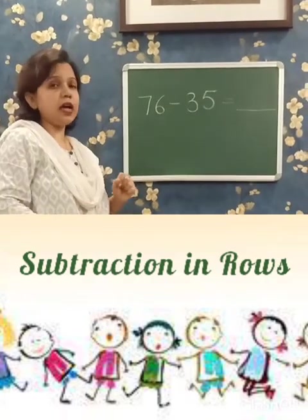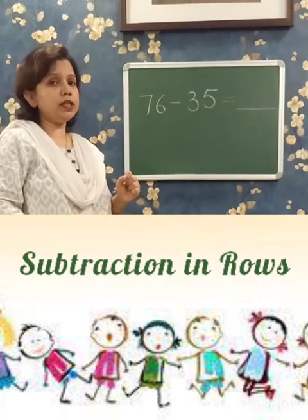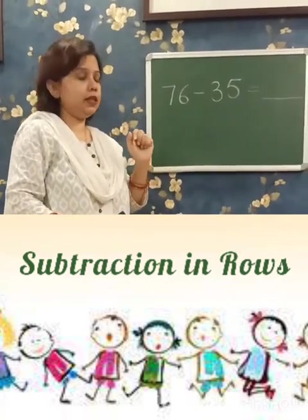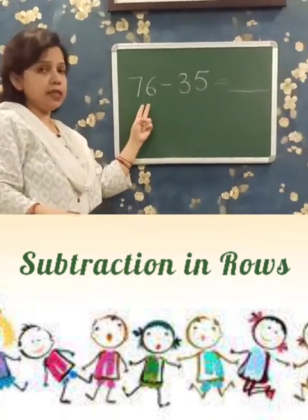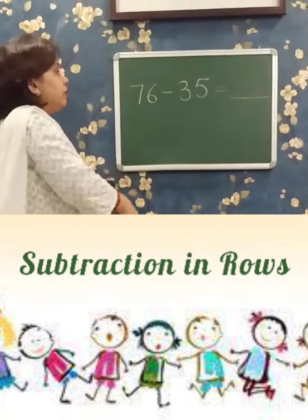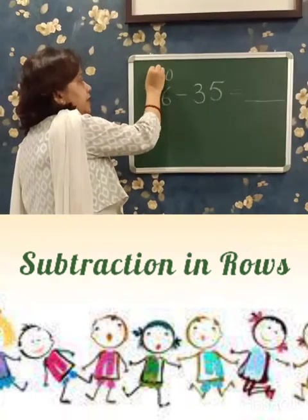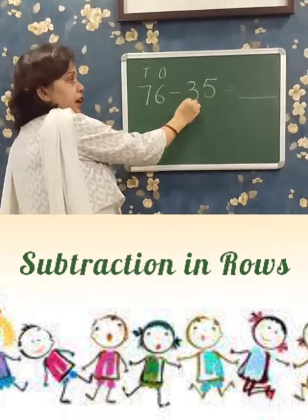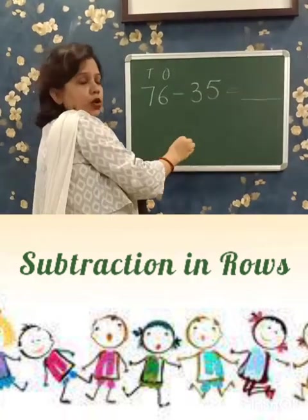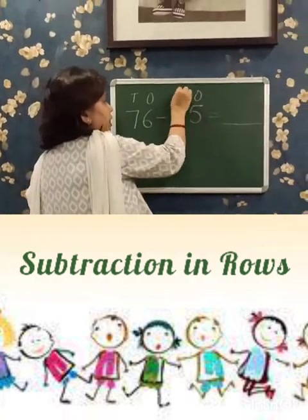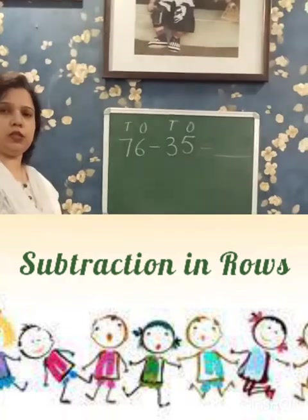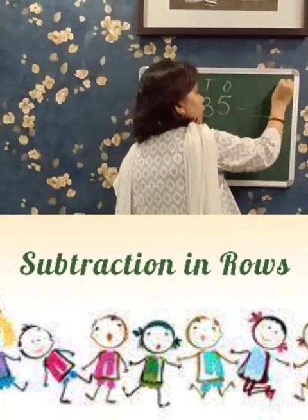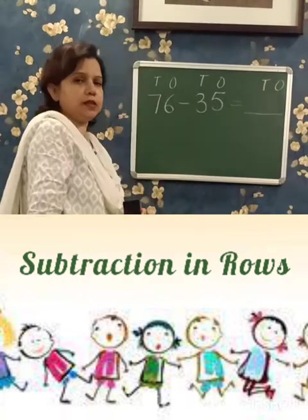Suppose 76 minus 35. To subtract in rows, first we will write the places above the numbers. 76 is a 2-digit number, so we write here 2 places: O, T. 35 is also 2 digits, so we write again 2 places: O, T. Then write O, T in the answer's place.